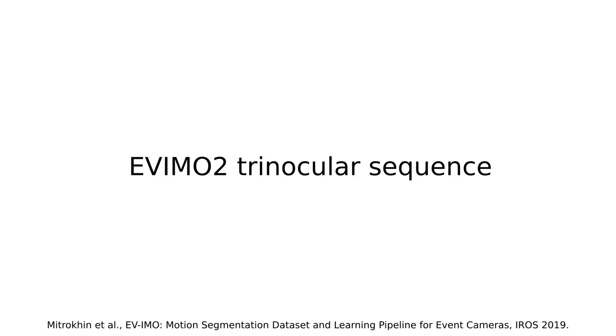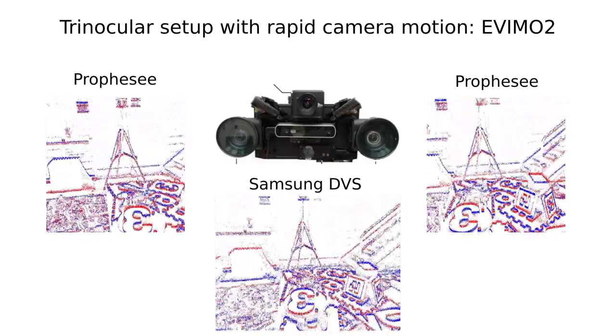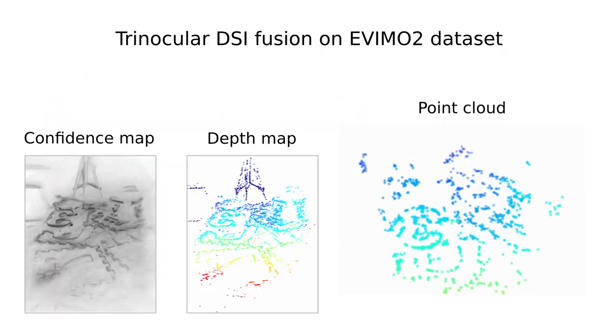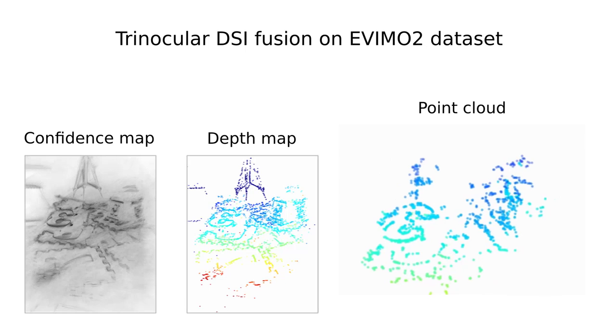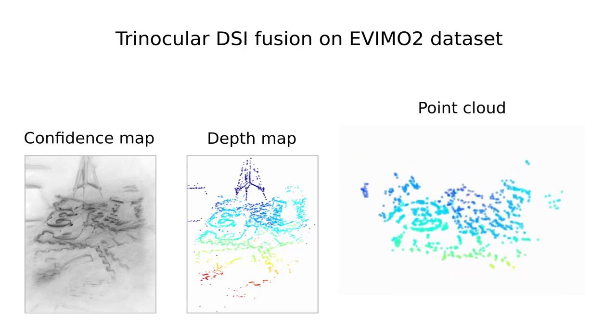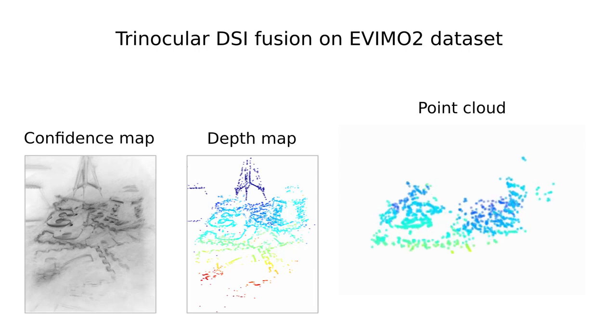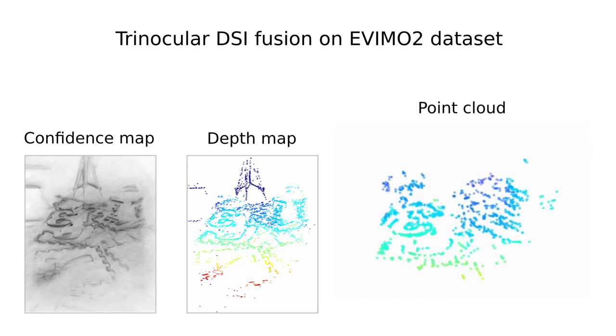A big advantage of our method is its scalability to multi-camera setups like in this EVIMO2 sequence containing 3 synchronized event cameras. Fusing the data from all 3 cameras at the DSI stage, we obtain accurate depth maps and point clouds while scaling linearly in computation. Please refer to our paper for further details. Thanks for watching.